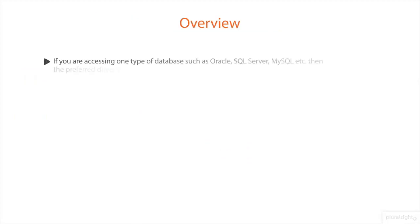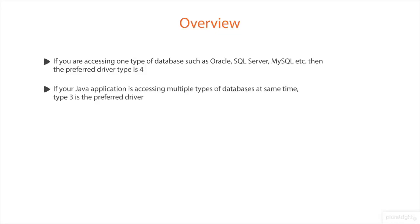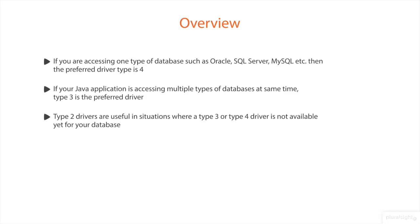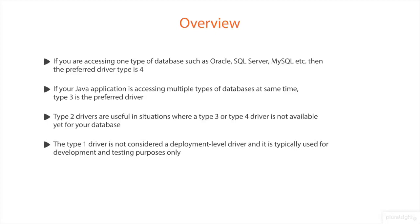Now let us understand the usage of these drivers. If you are accessing one type of database such as Oracle, SQL Server, etc., then the preferred driver type is Type 4. If your Java application is accessing multiple types of databases at the same time, Type 3 is the preferred driver. Type 2 drivers are useful in situations where Type 3 or Type 4 drivers are not yet available for your database. The Type 1 driver is not considered a deployment-level driver and is typically used for development and testing purposes only.